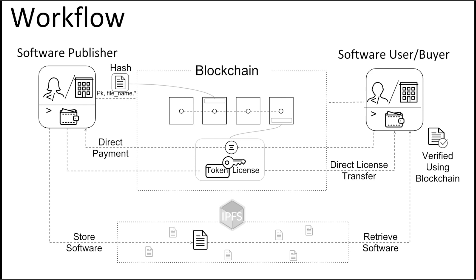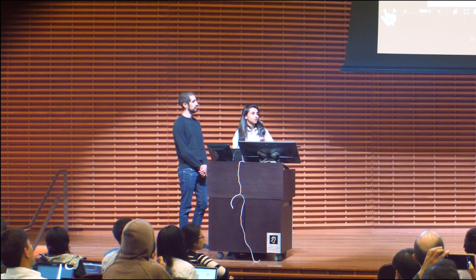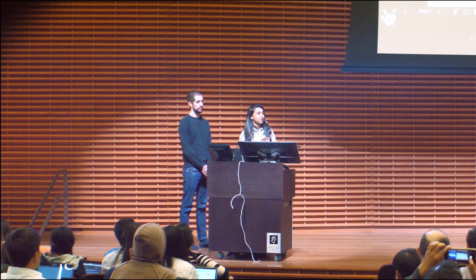As an end user or buyer, you are able to look for specific events — you can peruse through the blockchain, find the software package you want, and see updates for it. You can grab that yourself, and if it's not open source free software and you have to pay for it, you can do so from your Ethereum wallet for your ERC-721 token. When the package comes to you, you are able to verify it on your end as well, and even if you did not procure the package through IPFS, you can still get on the blockchain and verify it.